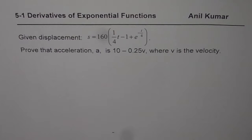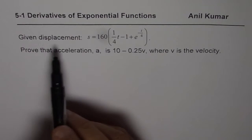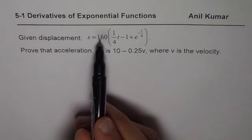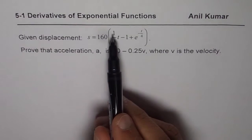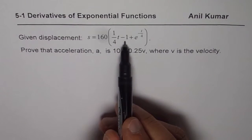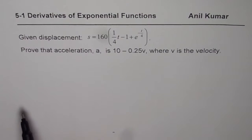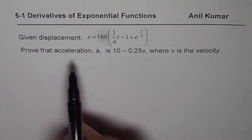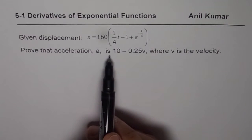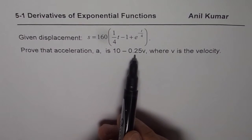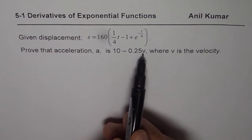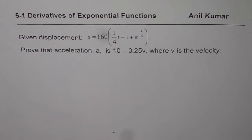I am Manil Kumar and here is an interesting question on derivatives of exponential functions. Given displacement s equals 160 times (1 over 4t minus 1 plus e to the power of minus t over 4), prove that the acceleration a is 10 minus 0.25v, where v is the velocity.